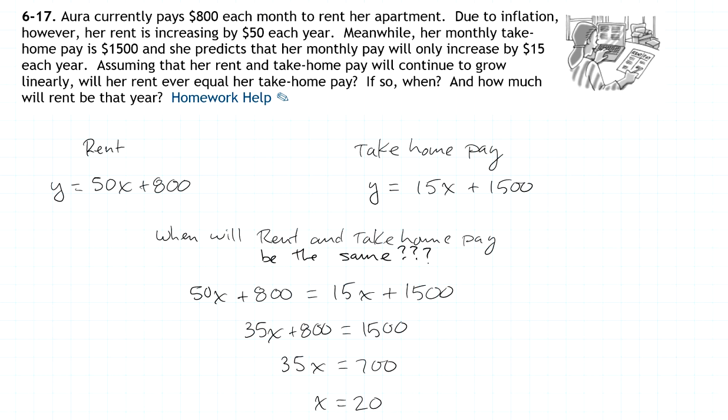Aura currently pays $800 each month to rent her apartment and due to inflation her rent is increasing by $50 each year. So I went ahead and wrote a linear equation that represents that situation.